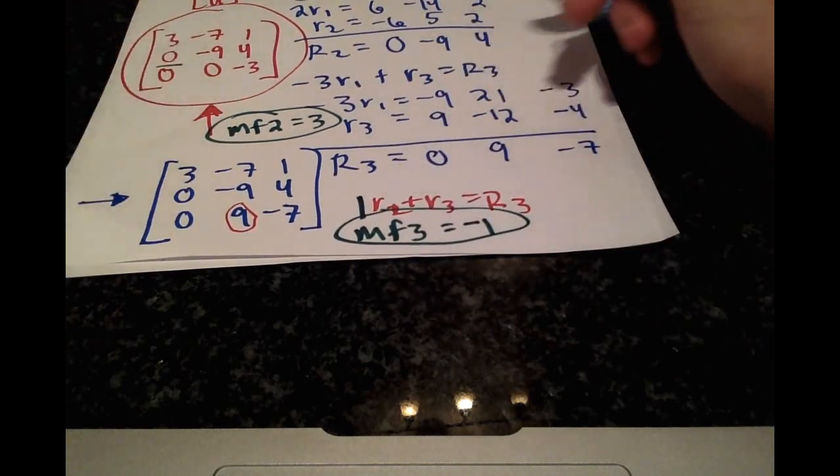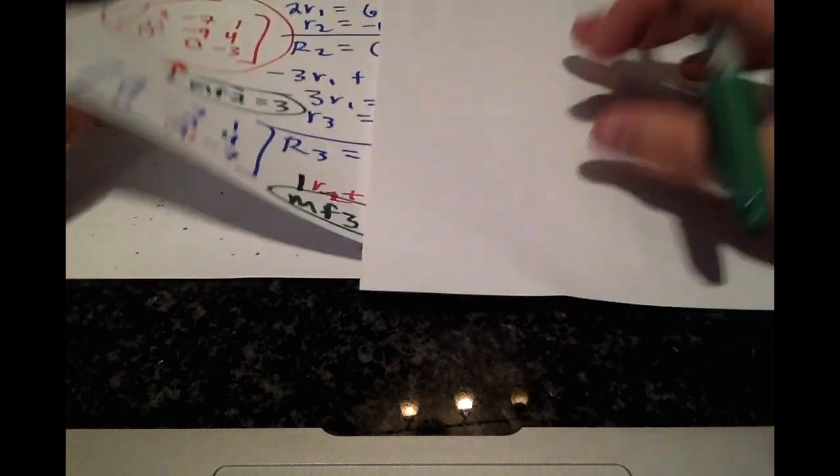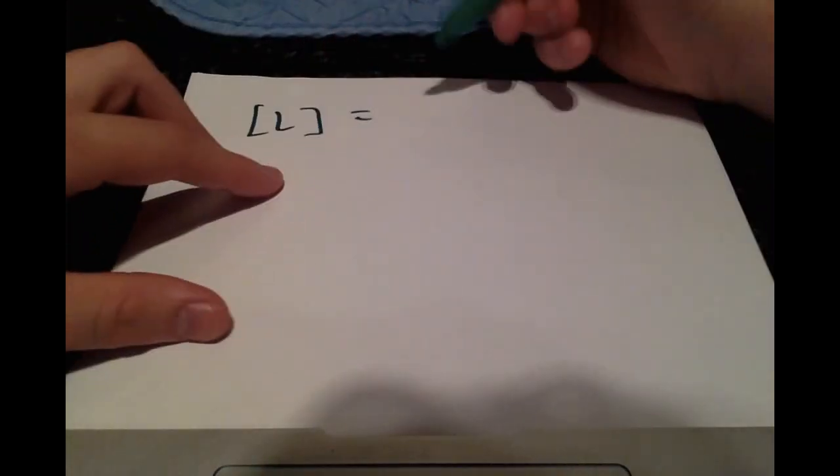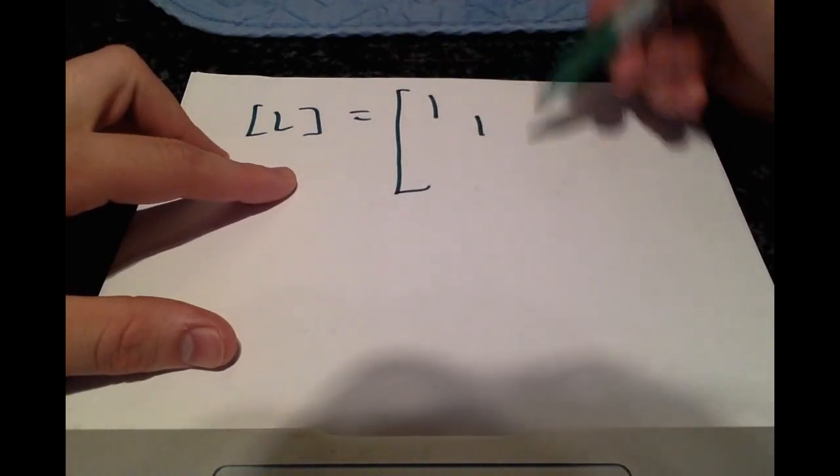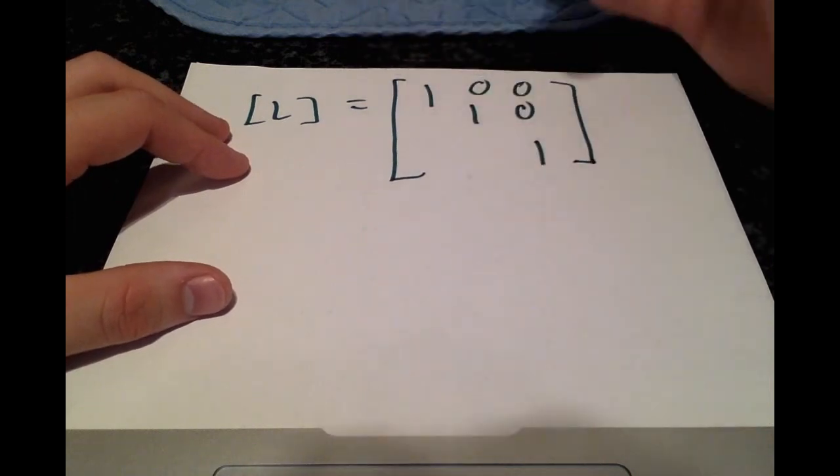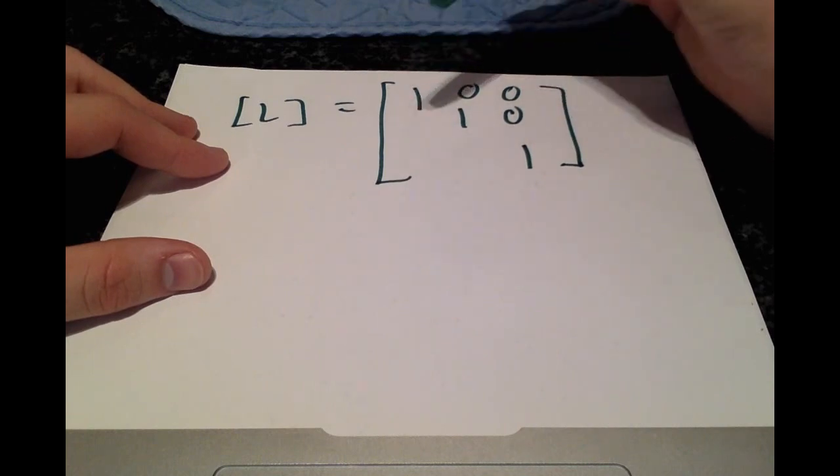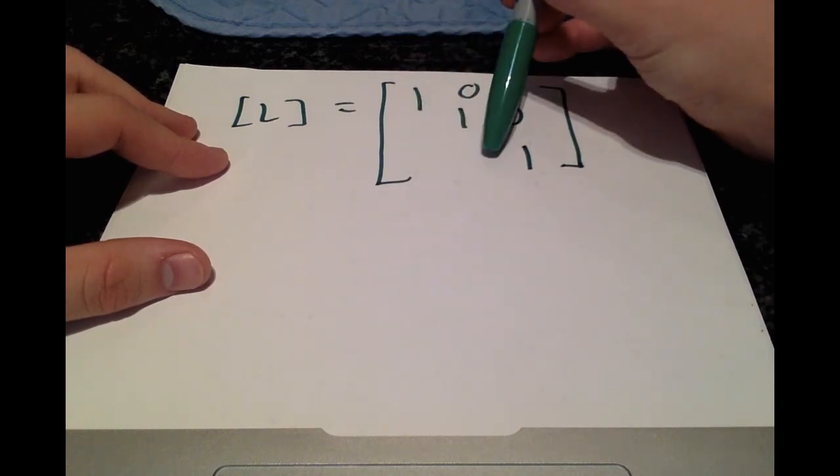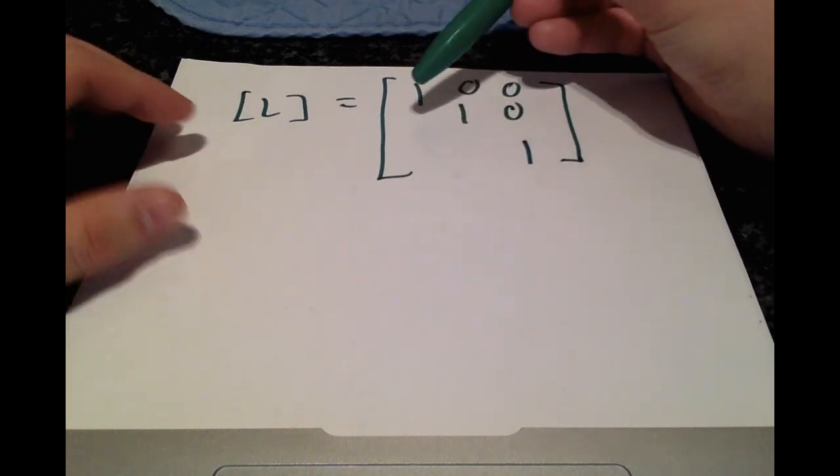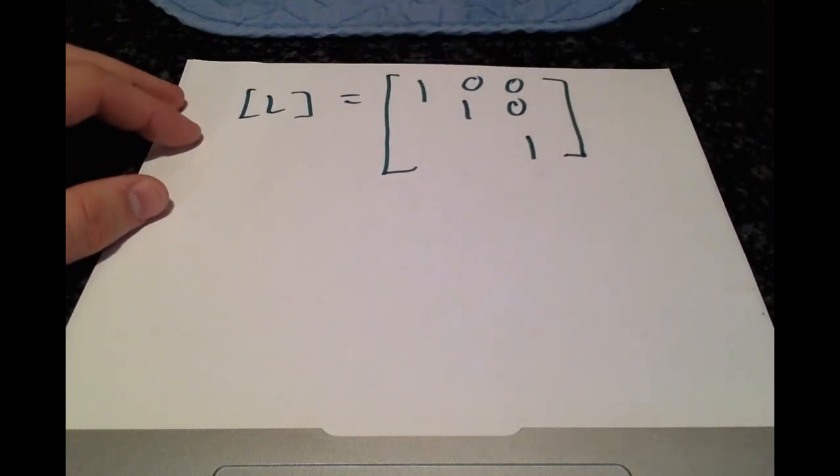And we'll use these three multiplication factors to now create our lower matrix. So the lower matrix takes the form 1, 1, 1, 0, 0, 0. It'll always have the 1s along the diagonal and 0s above it. And we're going to fill in multiplication factor 1, multiplication factor 2, and multiplication factor 3. And keep in mind that each multiplication factor correlates to the row operation that got rid of that term.